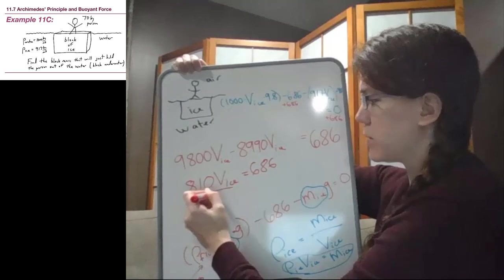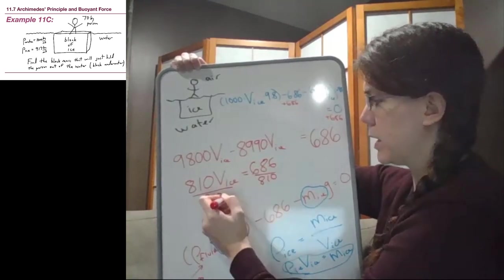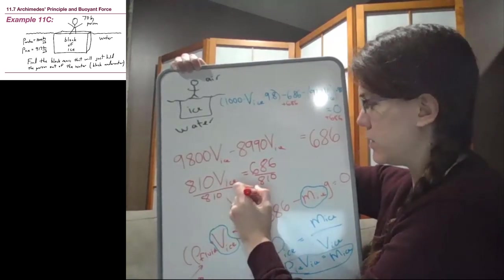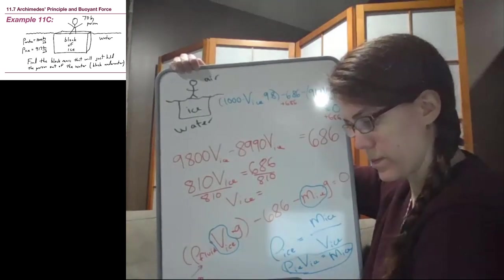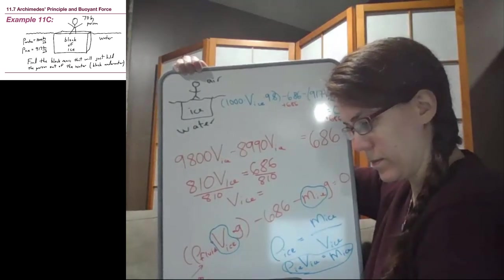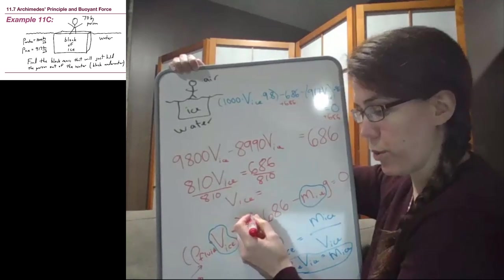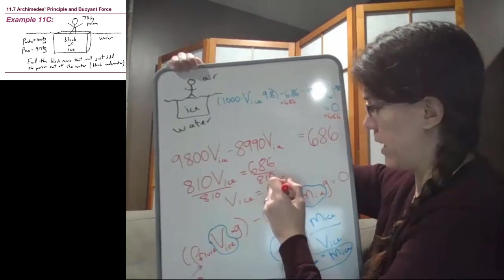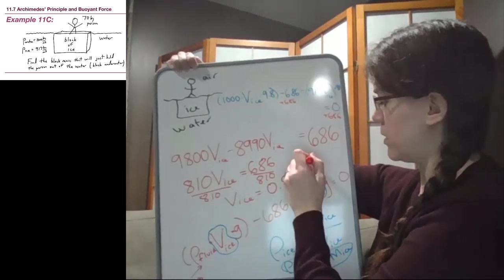So 9800 minus that 8990 is going to be 810 V ice equals 686. We'll divide both sides by 810. And so the volume of our ice is 0.85 cubic meters.